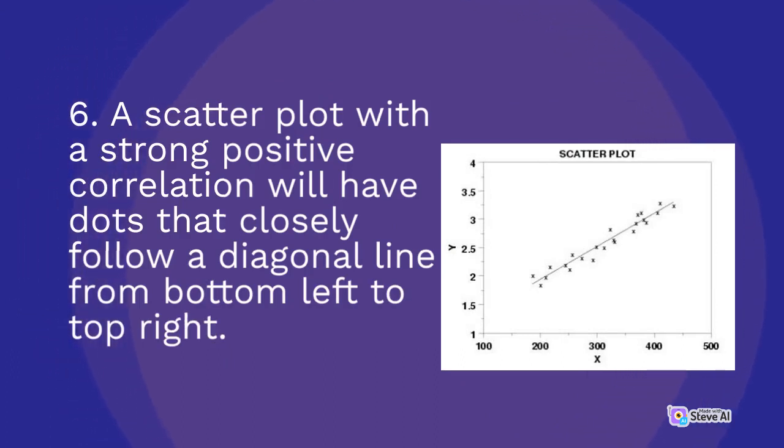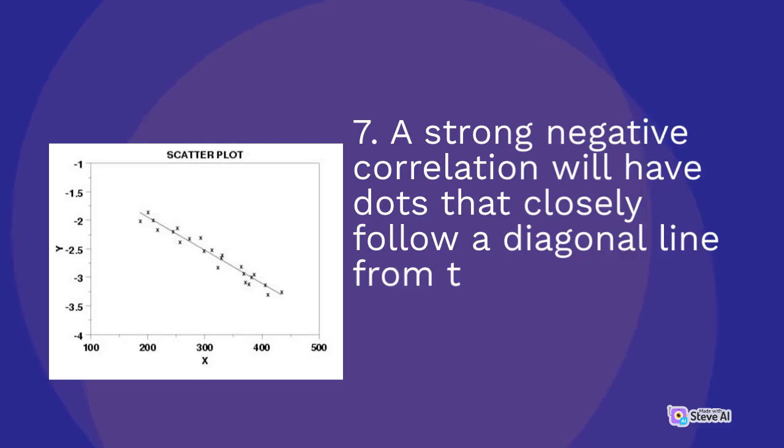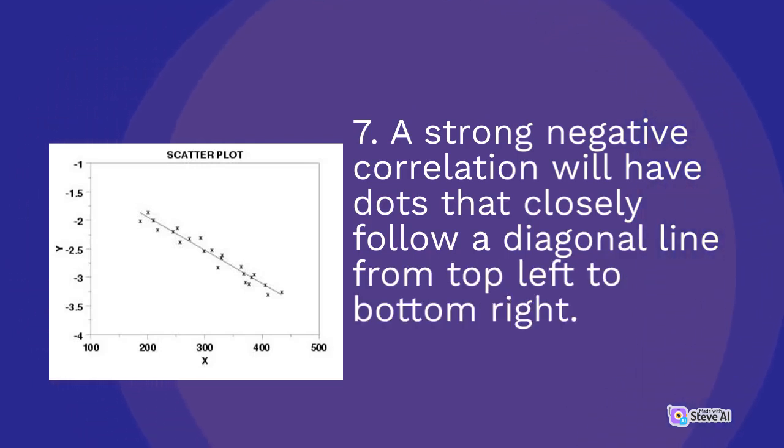A scatter plot with a strong positive correlation will have dots that closely follow a diagonal line from bottom left to top right. A strong negative correlation will have dots that closely follow a diagonal line from top left to bottom right.